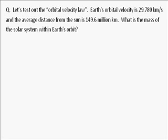Earth's orbital velocity is 29.78 kilometers per second. That number looks kind of small because in astronomy you're used to millions and billions, but really that's 30 kilometers every second that Earth is moving in its orbit. We're also given the Earth's average distance from the sun, and that's 149.6 million kilometers. So using the orbital velocity law with these two numbers, we can figure out the mass of the solar system within Earth's orbit.